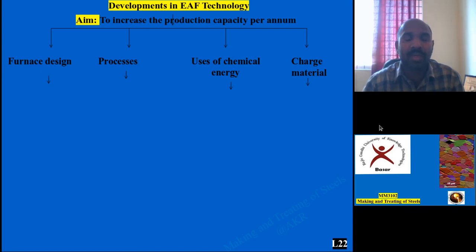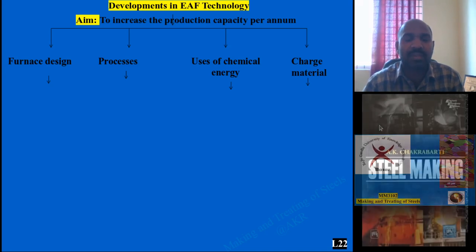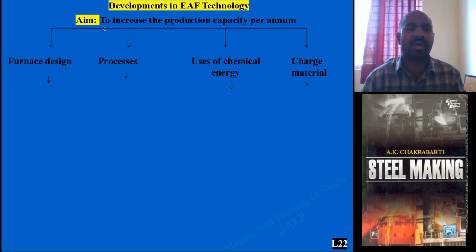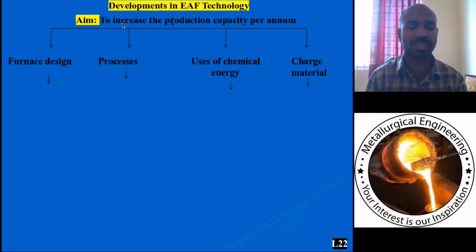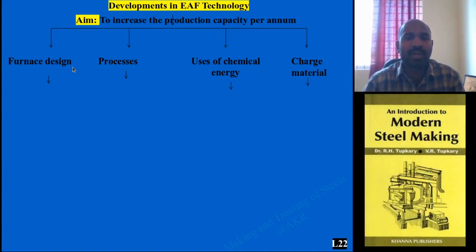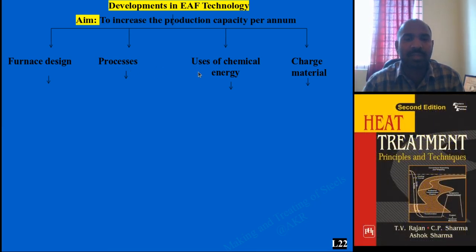Welcome to Making and Treating of Steel. Today I am going to explain the developments in EAF steel making technologies. In the form of a flowchart, the main aim of developments took place to increase production capacity per annum — through changes in furnace design, adopting bottom stirring processes, using chemical energy instead of electrical energy, and changing charge materials.